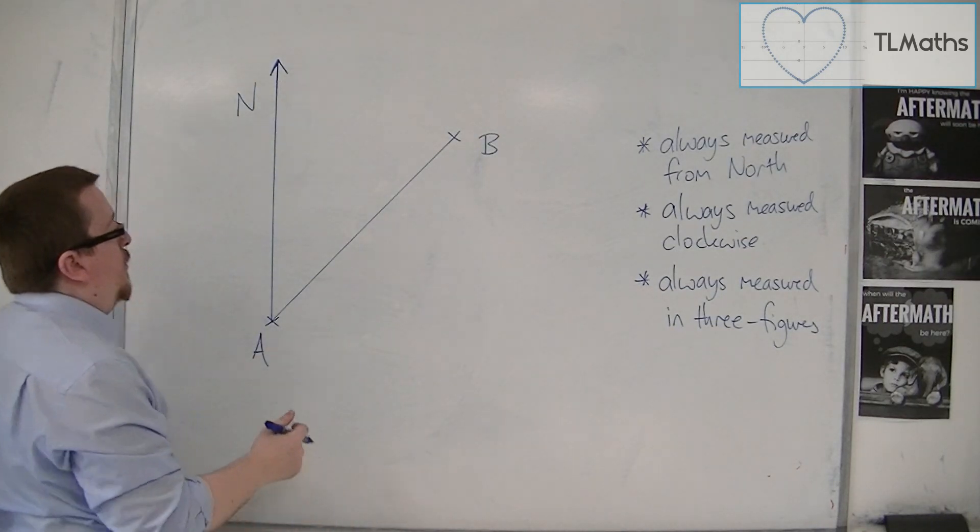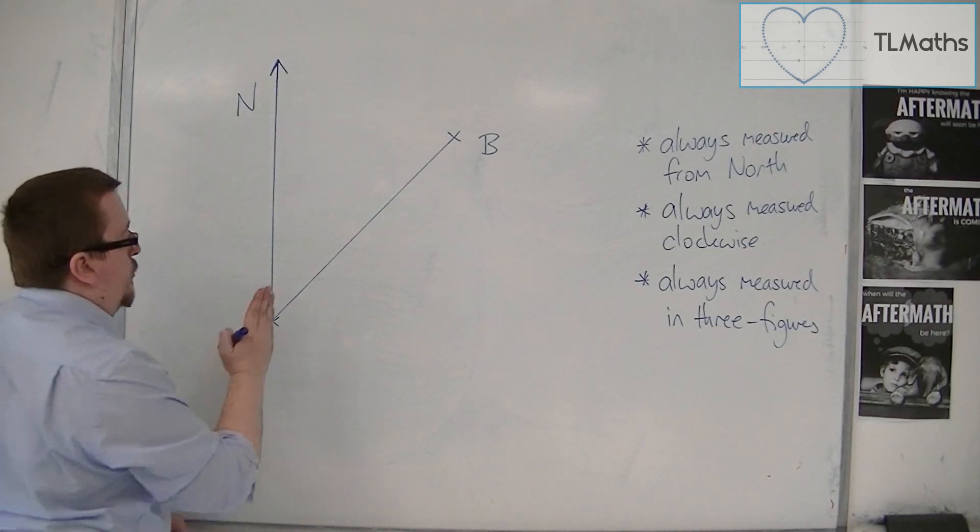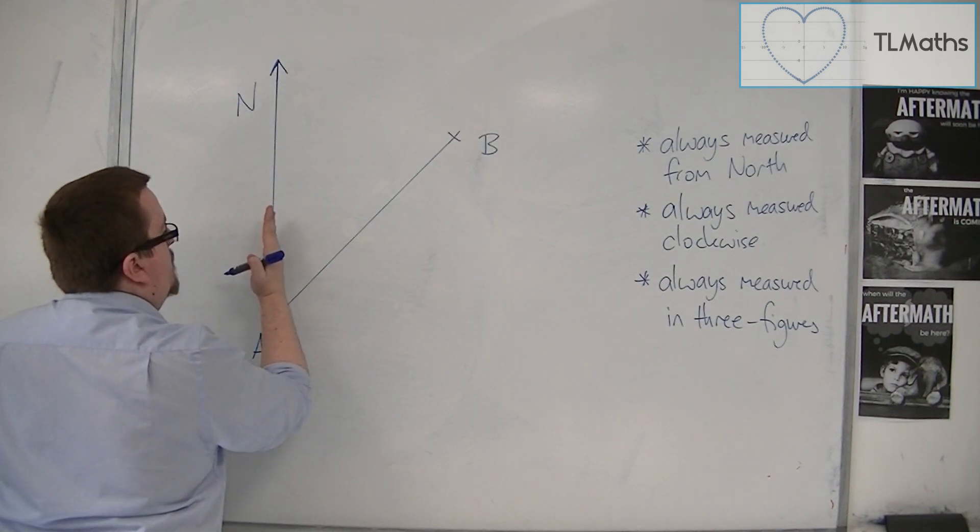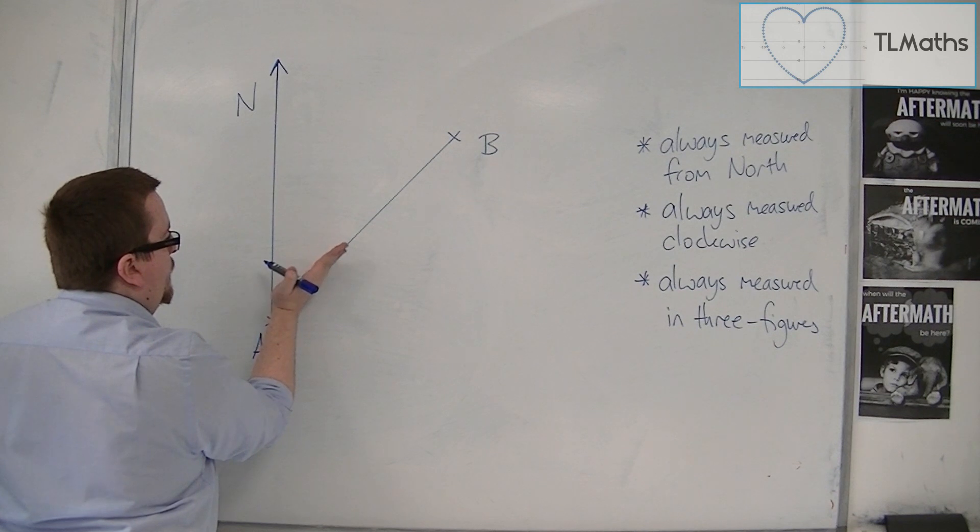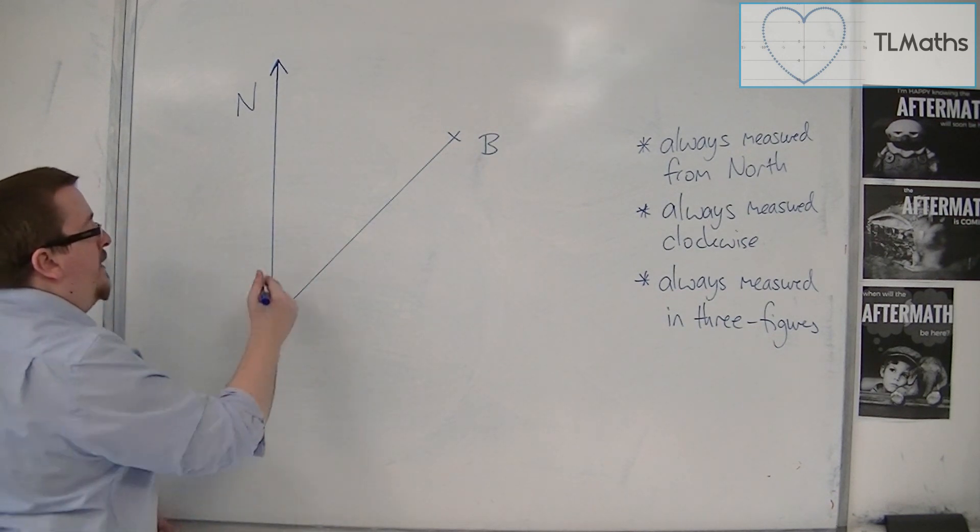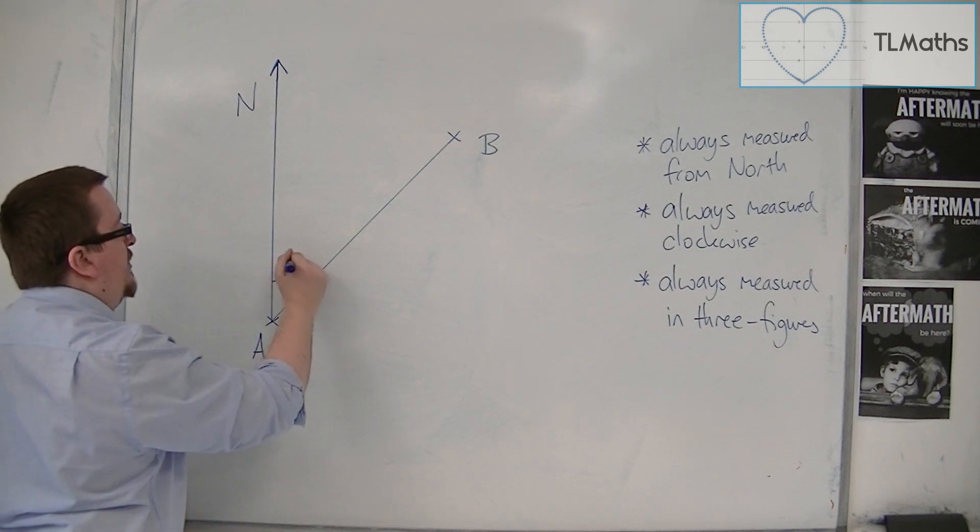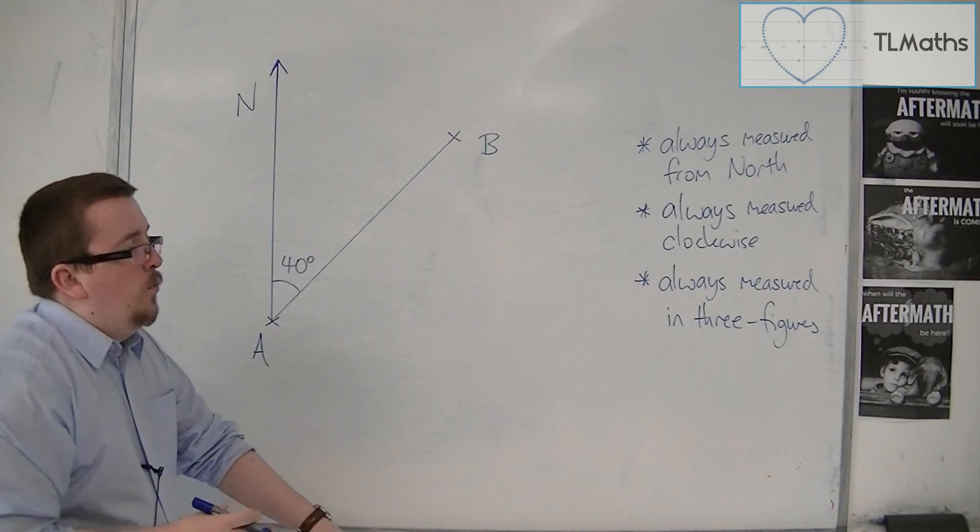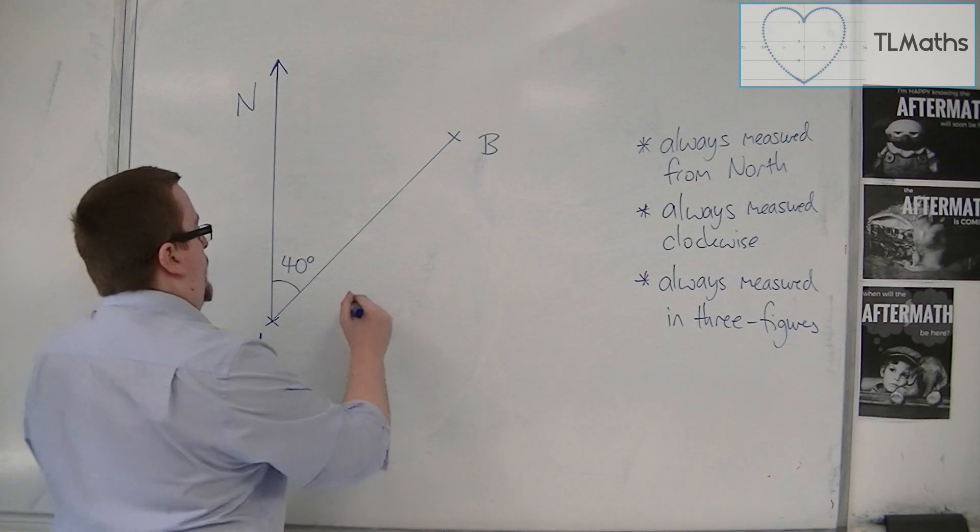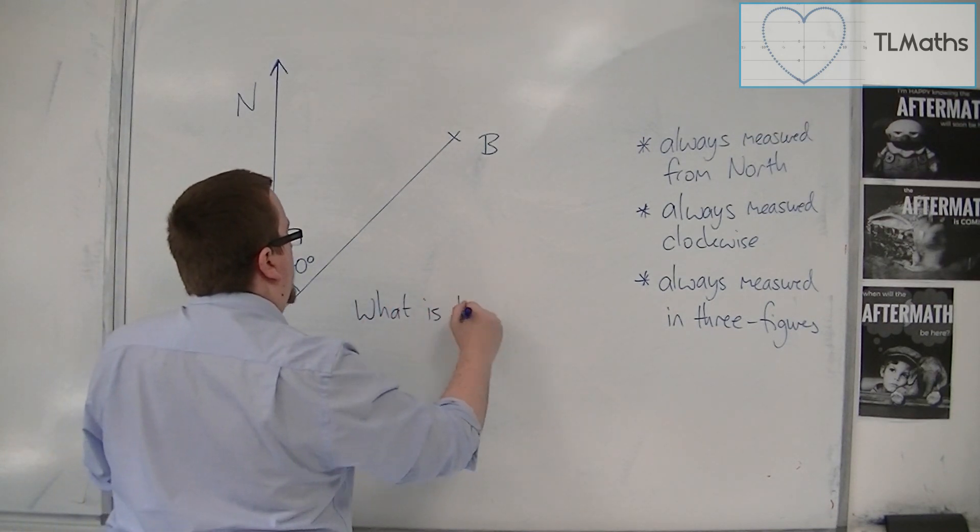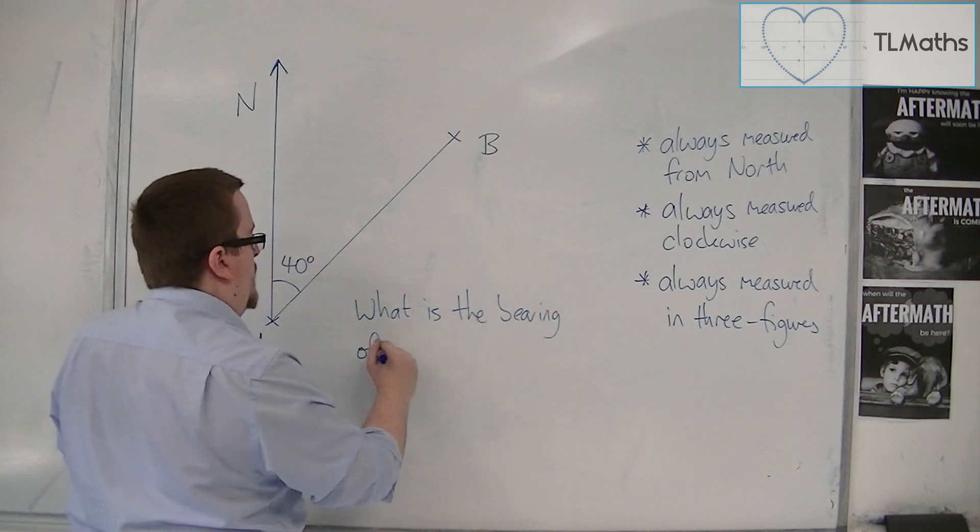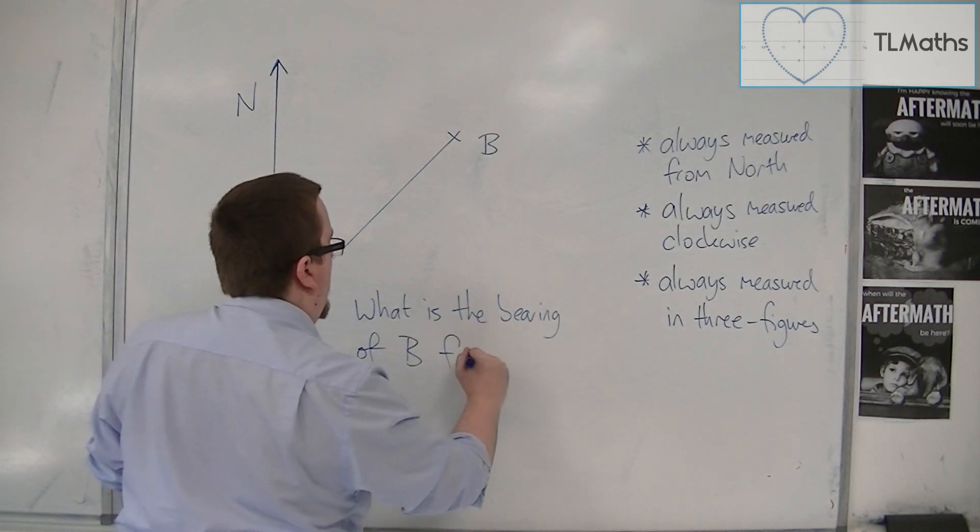So let's say that we measure this angle. We're going to measure it from north, and we're going to measure it clockwise. And let's say that the angle we get is 40 degrees. Then what we could be asked is, what is the bearing of B from A?